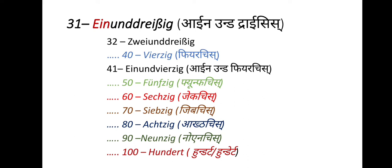40 is 'vierzig', 50 is 'fünfzig', 60 is 'sechzig', 70 is 'siebzig', 80 is 'achtzig', 90 is 'neunzig', and 100 is 'hundert' or 'ein hundert'. Write all these numbers in your copies.